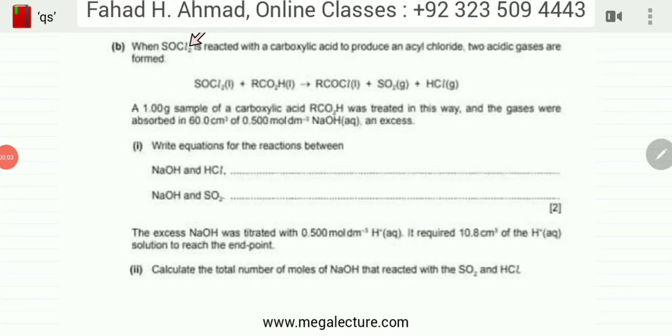When SOCl2 is reacted with a carboxylic acid to produce an acyl chloride, two acidic gases are formed. There's a reaction going on: SOCl2 reacting with carboxylic acid, and they've given you the products as well.